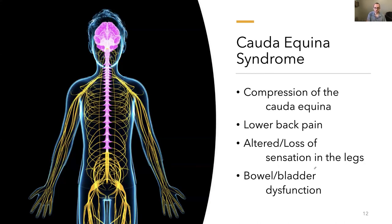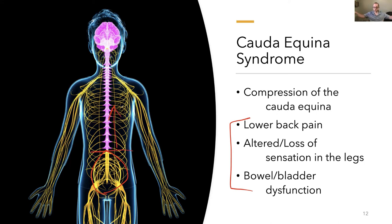Cauda equina syndrome is compression of the cauda equina — the horsetail nerve bundle below L2. It typically presents with lower back pain, altered or loss of sensation in the legs, and bowel and bladder dysfunction. Everything it affects is lower body because that's what the cauda equina innervates. Everything above that compression is fine. Bowel and bladder incontinence often accompany the lower extremity deficits.